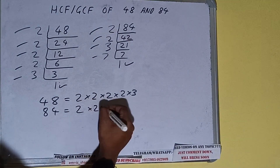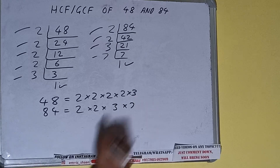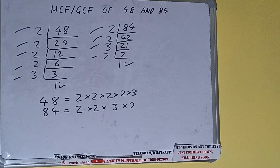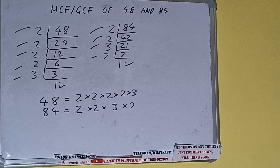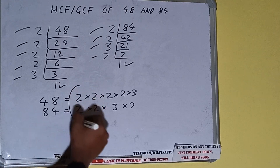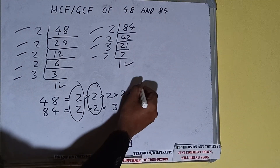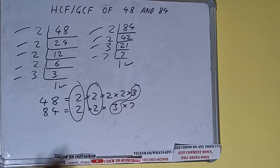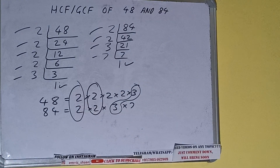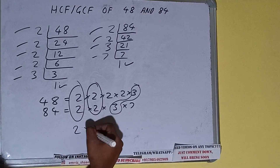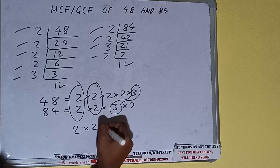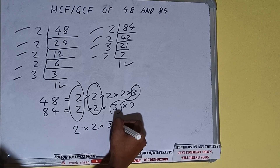The next thing we need to do is circle out the common prime factors. We have this 2 in common, we have this 2 in common, and we have this 3 in common. Do we have anything extra in common? No. So we have got one 2 in common, another 2 in common, and one 3 in common.